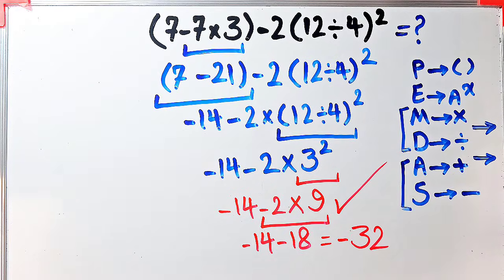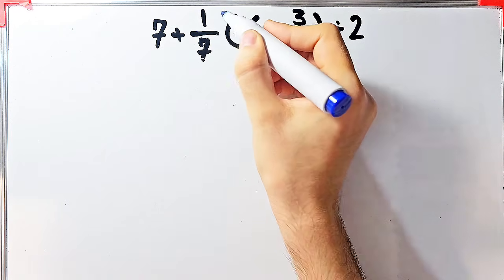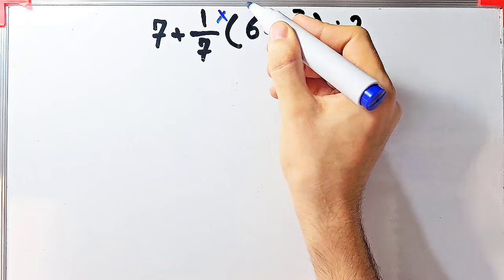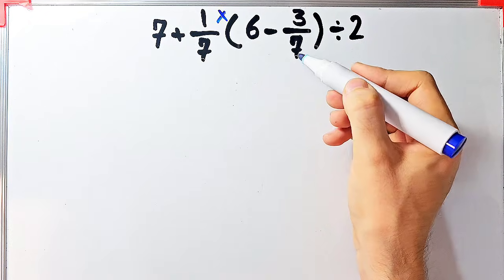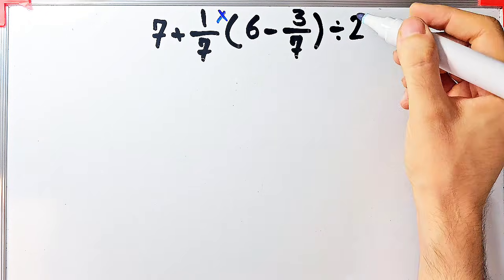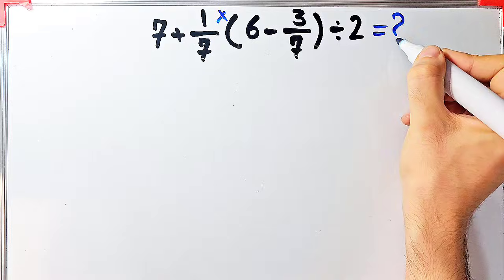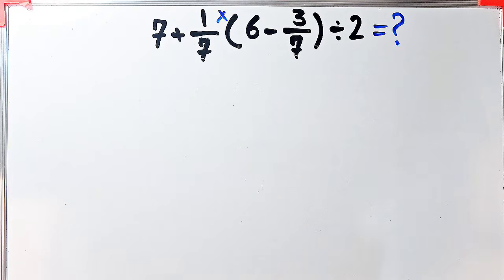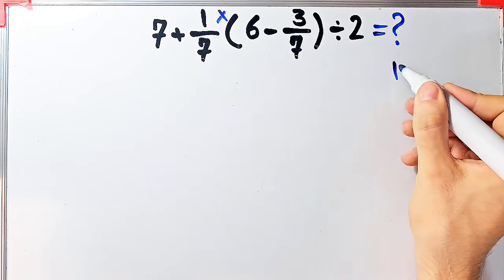Let's solve another question. Seven plus one over seven, then times open parenthesis six minus three over seven close parenthesis, divided by two. What is the answer of this question? Again we need to follow the PEMDAS rule to solve this question.